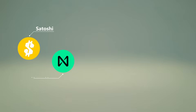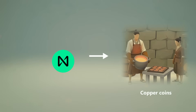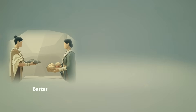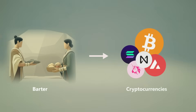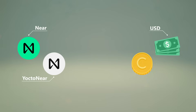Hello! Did you know that Satoshis and Yocto-NEAR are descendants of the very same logic that once pushed people to mint tiny copper coins? In this episode of Lantstorial, we'll explain how humanity moved from barter to cryptocurrencies, why Yocto-NEAR and NEAR exist, and how they relate to the USD and the cent. Let's go!